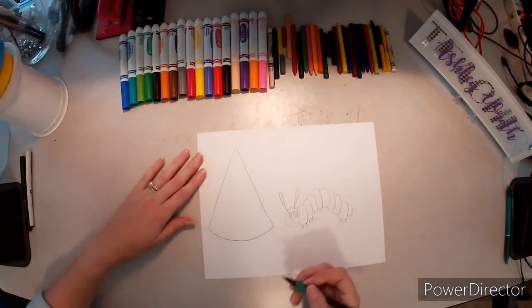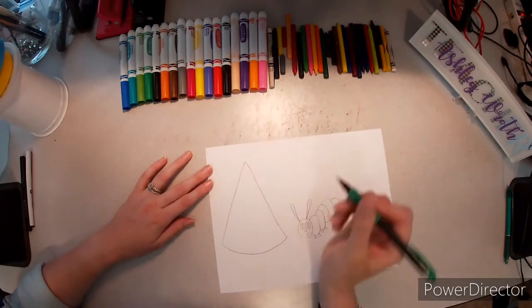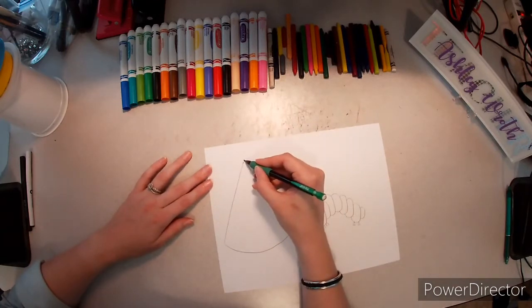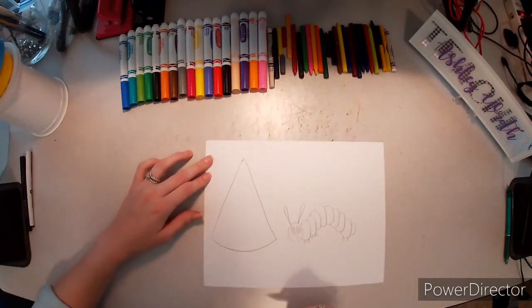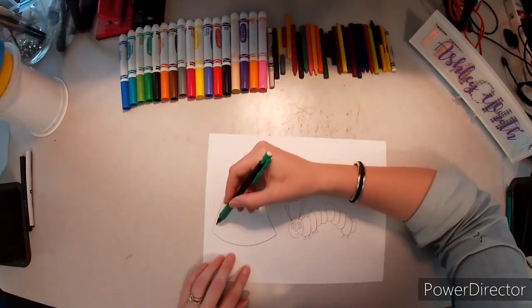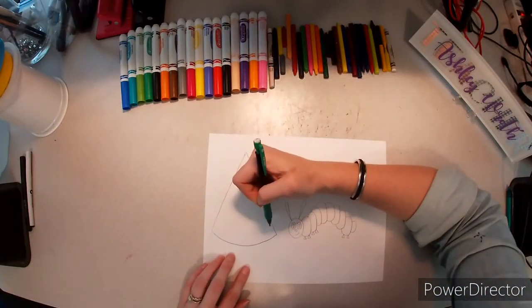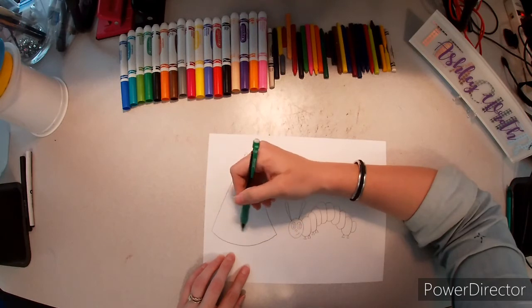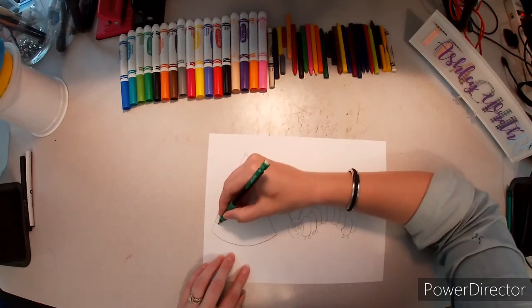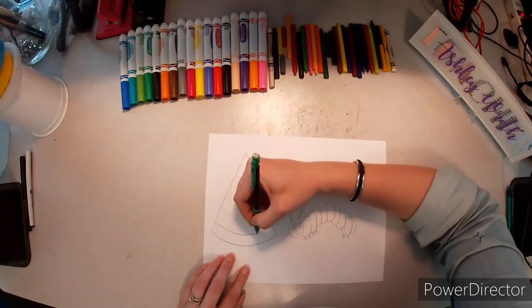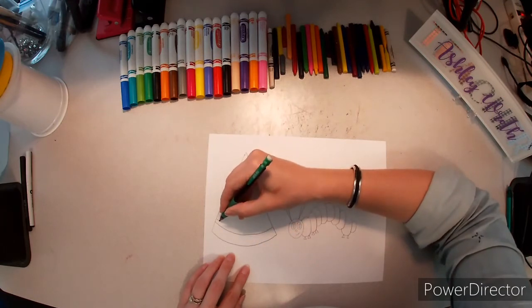Now, I'm going to do the same thing on this side and I'm aiming towards that dot. Oh, I missed it a little bit, but that's okay. I'm the artist and I can fix it. Just fixed. Now, on our watermelon, we're going to do a thick stripe and then a thin stripe. So, a thick stripe and then a thin stripe.